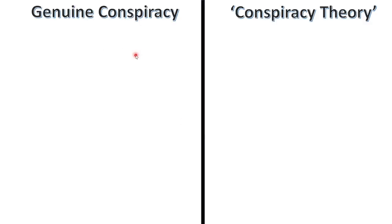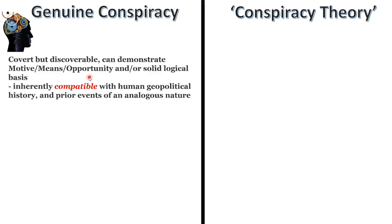Let's look at my guidelines for sorting between the two. A real conspiracy will be covert but discoverable, and you can demonstrate motive, means and opportunity — pillars from the world of criminology. Or a solid logical basis demonstrating a logical reality supporting this may be a collusion. And it's inherently compatible with human geopolitical history, with prior events of an analogous nature discoverable. It's not something completely out of the blue and absurd. My checklist will flesh that out.